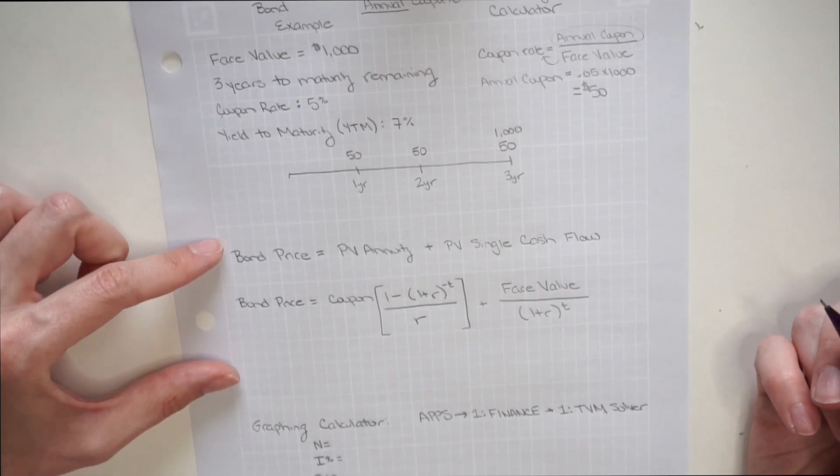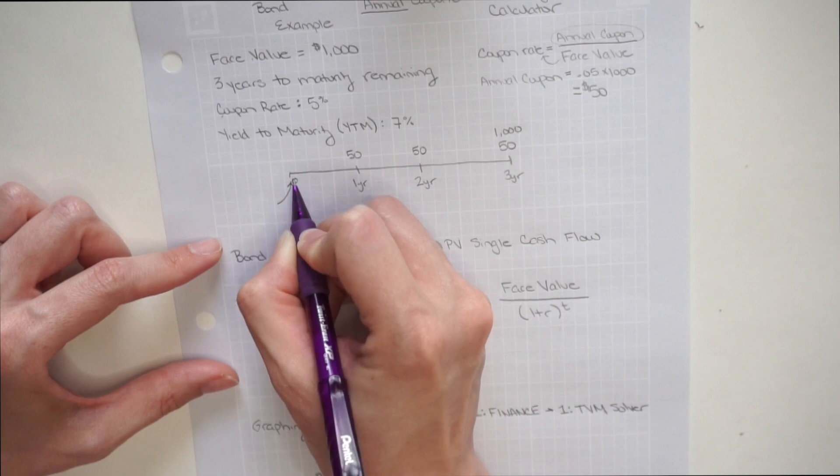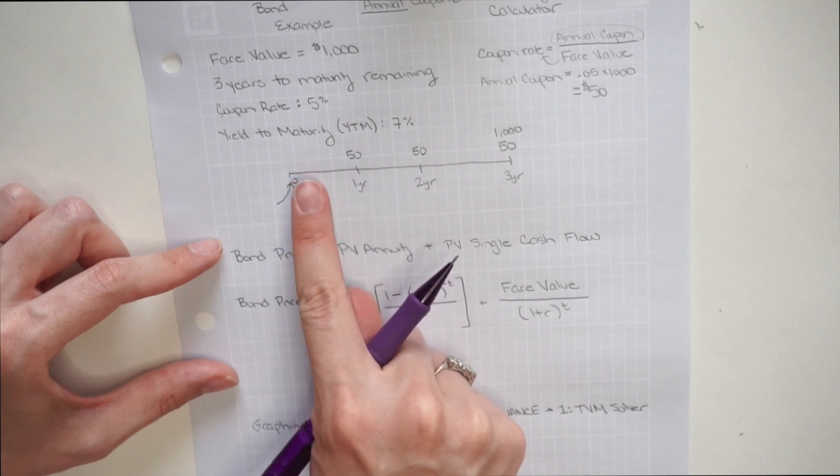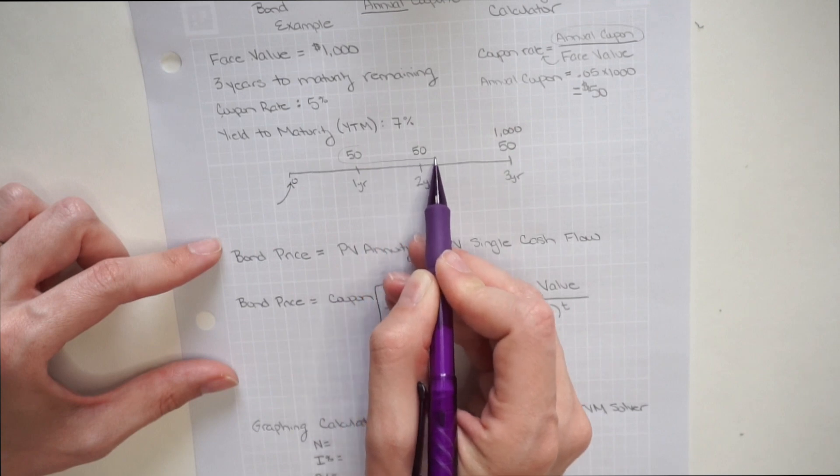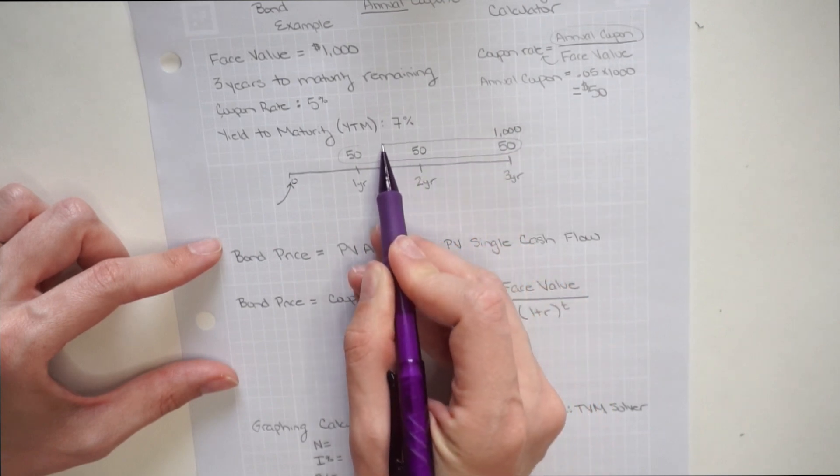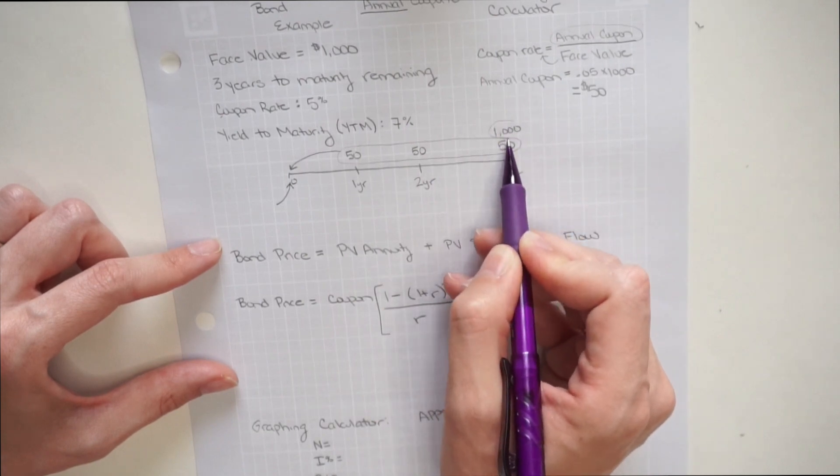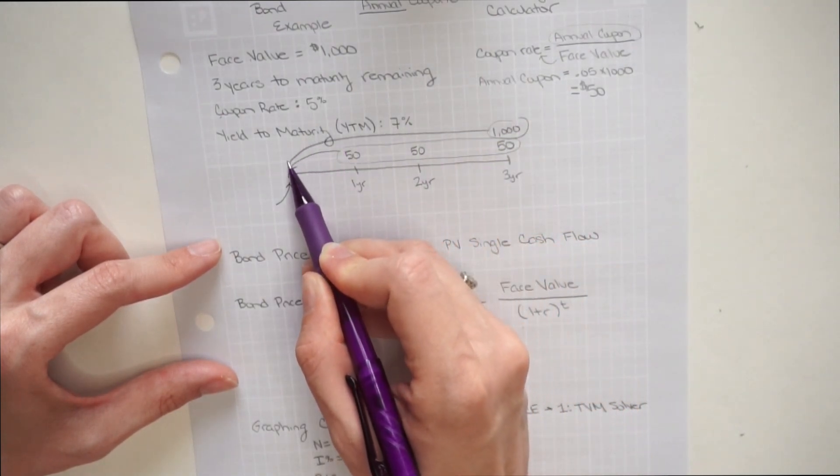So if I look at my equation, I want to figure out what the price of the bond is today or at time 0. The price of a security today is equal to the present value of the future cash flows. So I need to take each one of these coupons and discount them back to time 0. And then I need to take this face value and discount that back to time 0 as well.